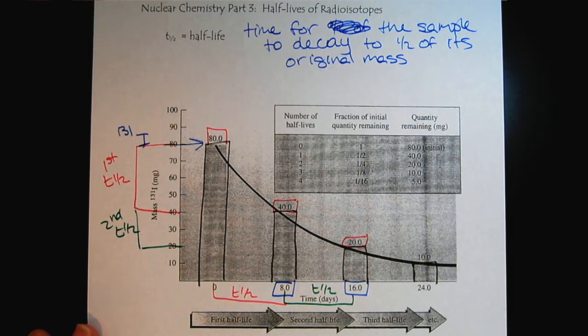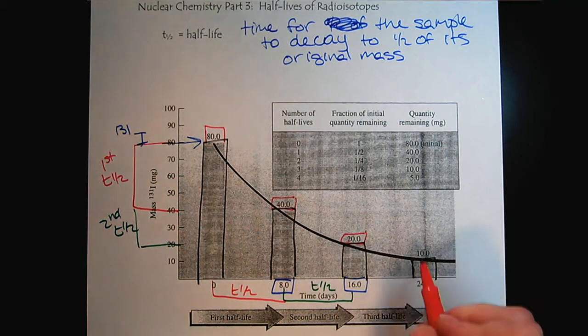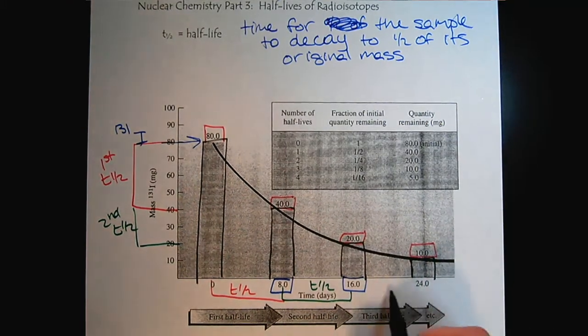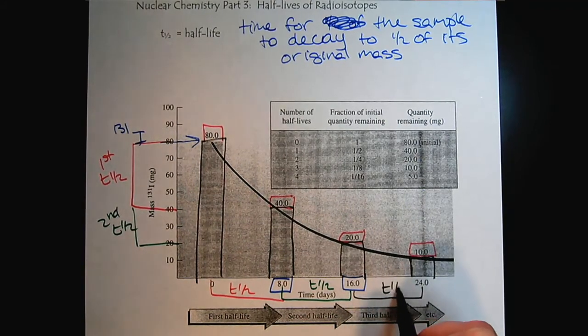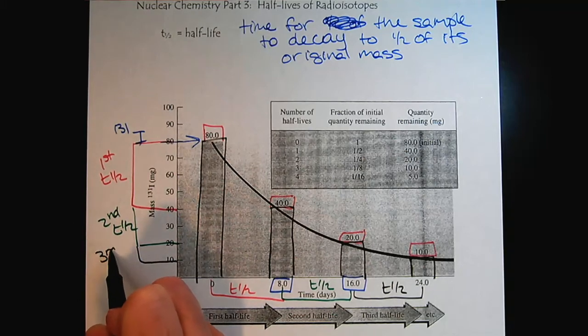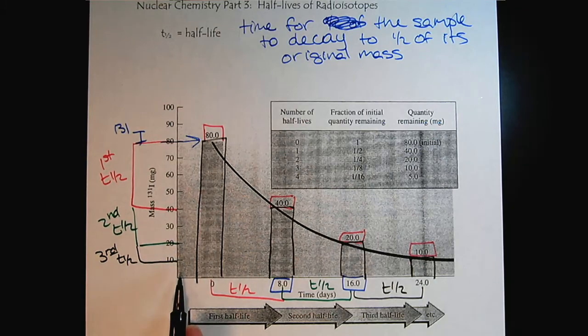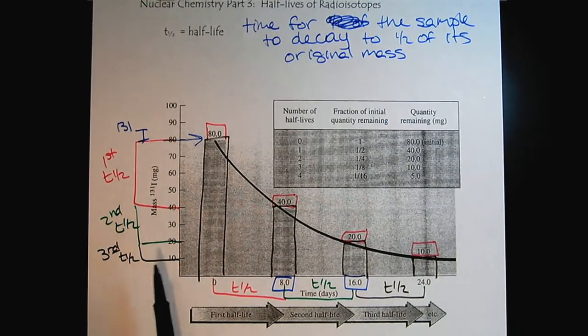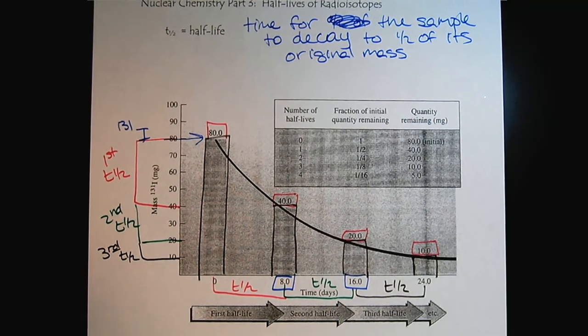And then last but not least, we can get all the way down to 10. And so once again, we've waited another eight days. And so now in the third half-life, the sample drops from 20 milligrams to 10 milligrams. So notice as there's less and less sample, there's less to lose. But the half-lives always remain the same.